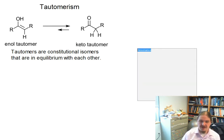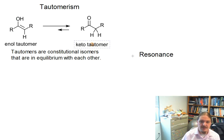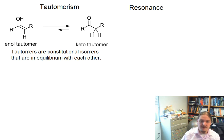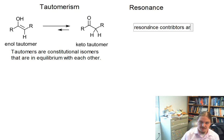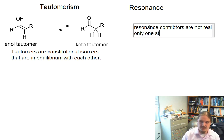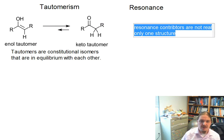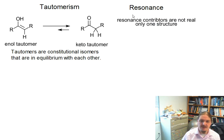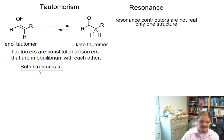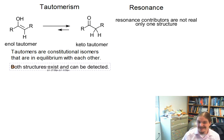To distinguish between tautomerism and resonance: resonance contributors are not actually real — there's only one structure. But in tautomerism, what we actually have are structures that are in equilibrium with each other. Both structures in a tautomerism system can exist and can be detected.